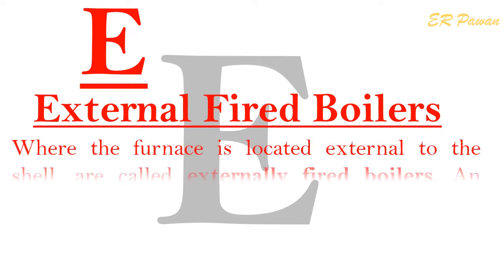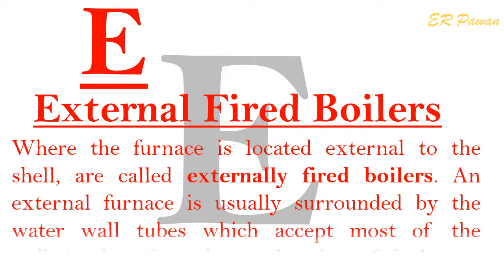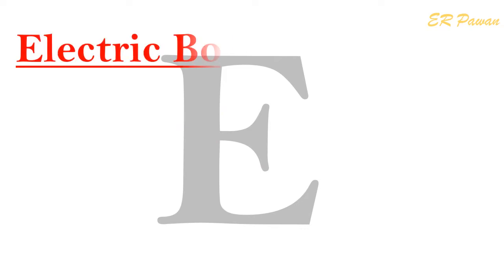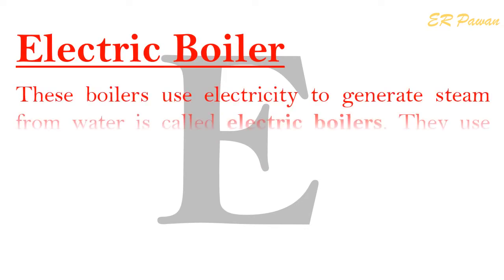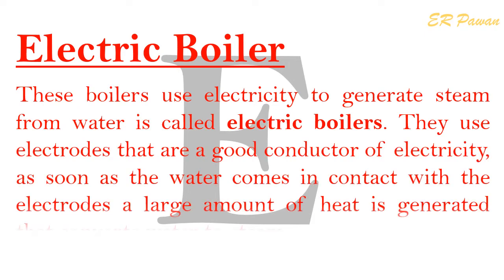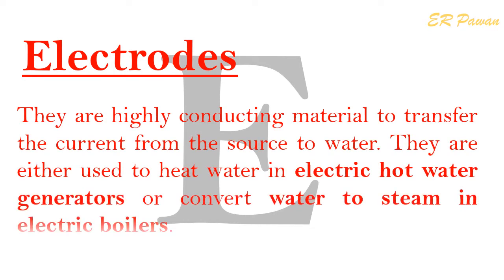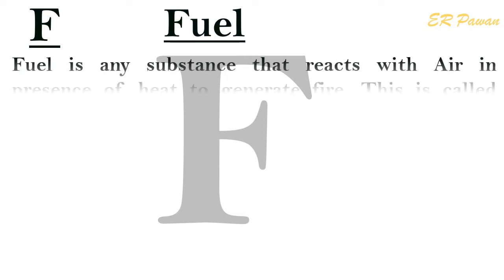E — External Fired Boilers: Boilers where the furnace is located external to the shell are called externally fired boilers. An external furnace is usually surrounded by water wall tubes which absorb most of the radiation heat from combustion of fuel. Electric Boiler: Boilers that use electricity to generate steam from water are called electric boilers. They use electrodes that are good conductors of electricity. As soon as water comes in contact with the electrodes, a large amount of heat is generated that converts water to steam. Electrodes: They are highly conducting materials used to transfer current from the source to water, either in electric hot water generators or electric boilers.